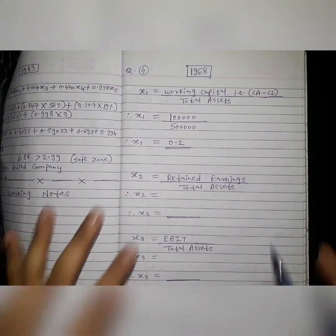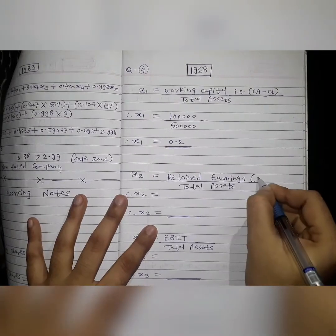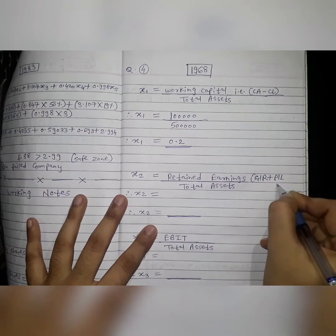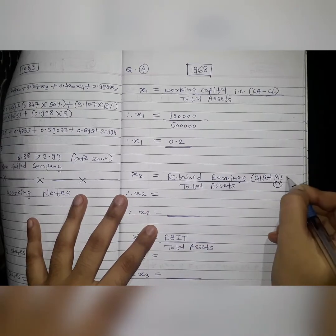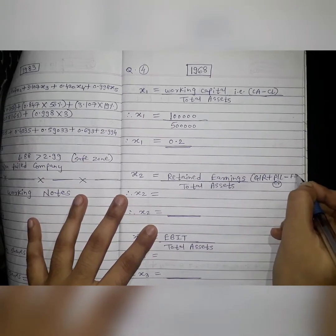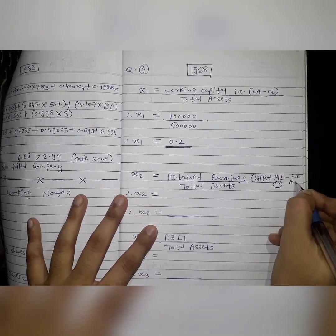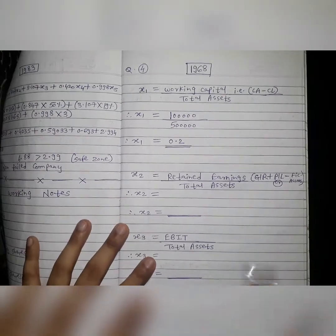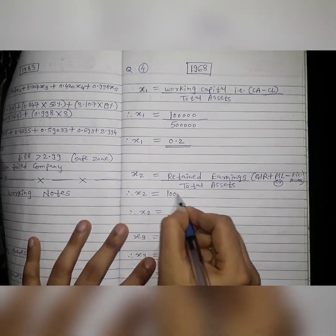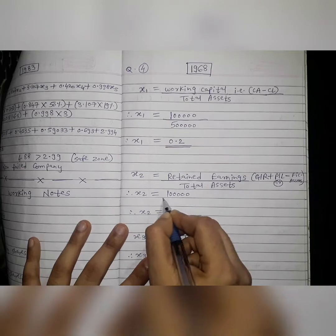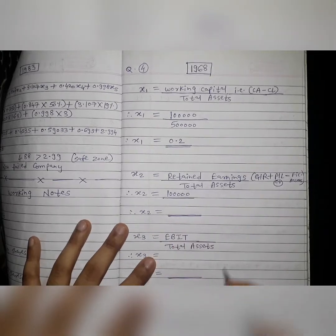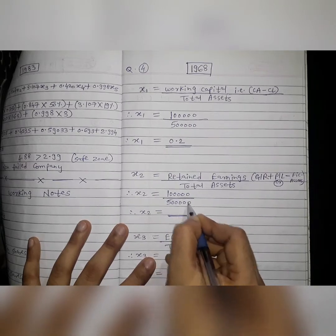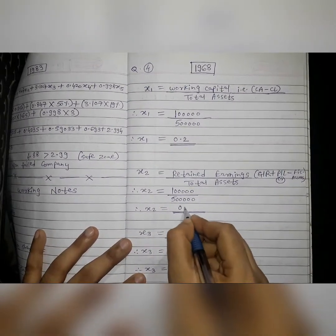To summarize X2: general reserve plus profit and loss credit balance minus fictitious assets gives retained earnings of Rs. 1 lakh. Divided by total assets of Rs. 5 lakh, the answer is 0.2.